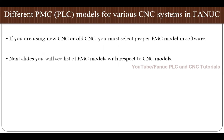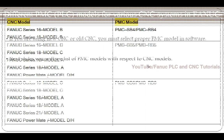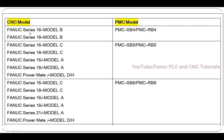Next I will show you a list of PMC models according to CNC models. If you are using Fanuc Series 16i Model B, you have to select PMC SB4 or PMC RB4 in software. If you are using CNC series like 16 Model C, 18 Model C, 69 Model A, 89 Model A, or Powermate-i, you have to select PMC SB5 or PMC RB5 in your programming file.